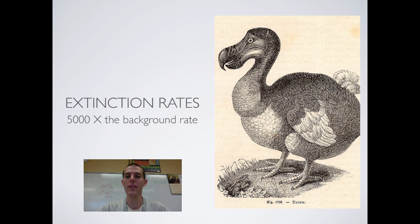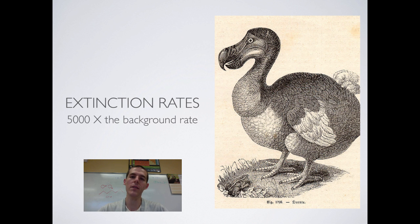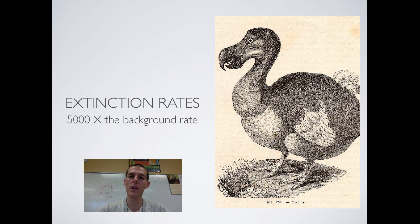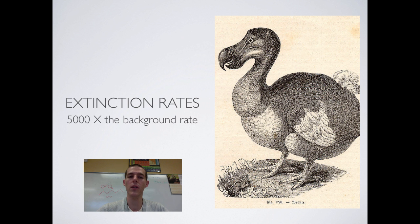Our next environmental indicator is extinction rates — the rate at which animals around the world go extinct. Being extinct obviously means it is gone and not coming back. The general background extinction rate is about one species per year in a world undisturbed by humans. Scientists have found that currently somewhere between 5,000 and 10,000 species per year are going extinct — meaning the current rate is 5,000 to 10,000 times the background rate. Most of those extinctions are the result of habitat loss from people destroying habitat for agricultural purposes or for development.